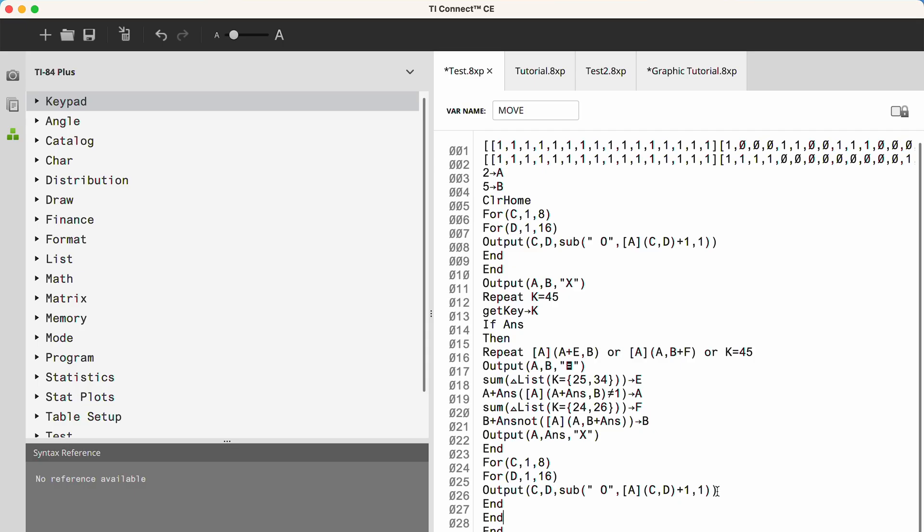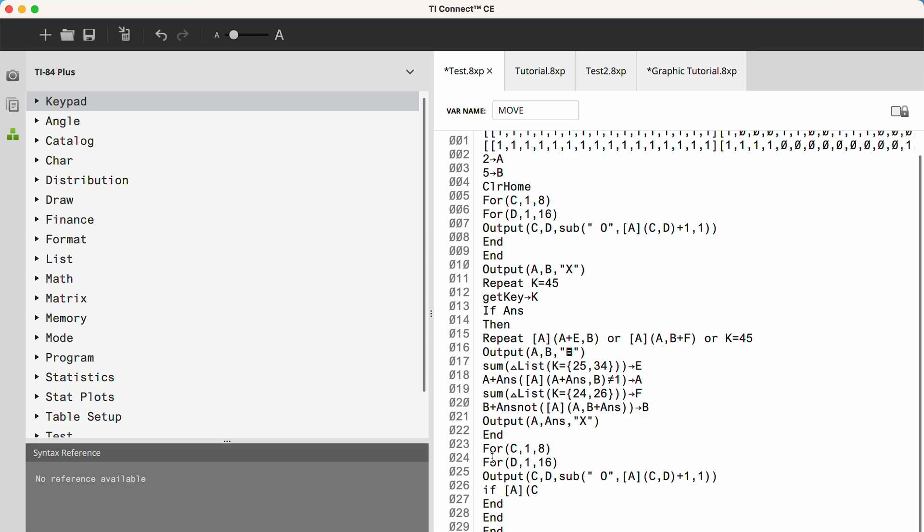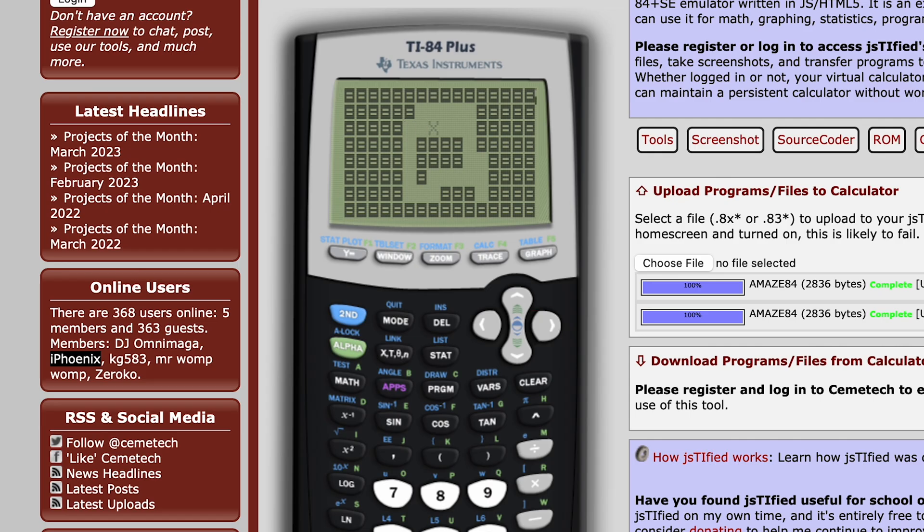Next up was the player movement. This was, again, pretty easy. It just checked the values on the matrix and only moved into a new space if it was empty. Boom. Easy peasy. Time to move on to the next step.